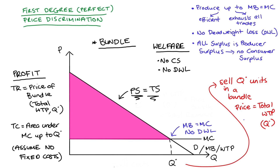This strategy gives exactly the same outcomes as the two-part tariff and as prices equal to willingness to pay. I've only taught bundling as first degree price discrimination once before, and I hope it doesn't confuse you because we sometimes refer to second degree price discrimination strategies as bundling as well. But it is different from second degree — in second degree, the firm offers a menu and the consumer self-selects into different groups, so we don't get the same outcomes in terms of efficiency or no consumer surplus. They are very different strategies.